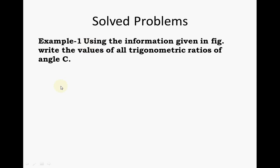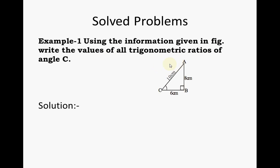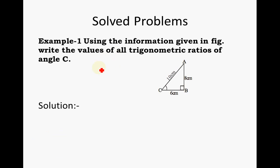After discussing the initial theoretical part for IIT Foundation level for the chapter of Trigonometry, let us see a few applications through numericals of whatever formulas we have learned so far. In this problem, they are asking us, using the information given in the figure, to write the values of trigonometric ratios of angle C. Our requirement is to find out all trigonometric ratios for angle C, so basically this angle C will be our theta.